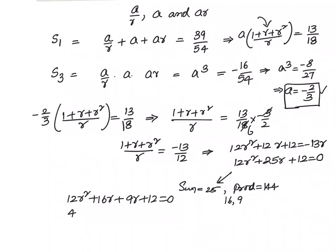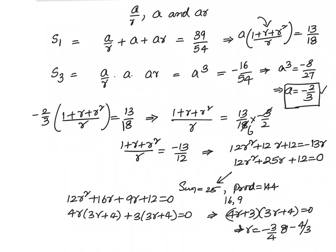Can we take 4r common? 4r(3r + 4) + 3(3r + 4) = 0. That gives us r equals to -3/4 or -4/3. Any one of them we can take; we will get the same numbers.